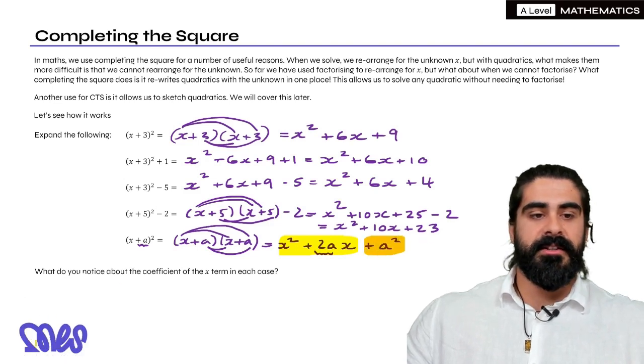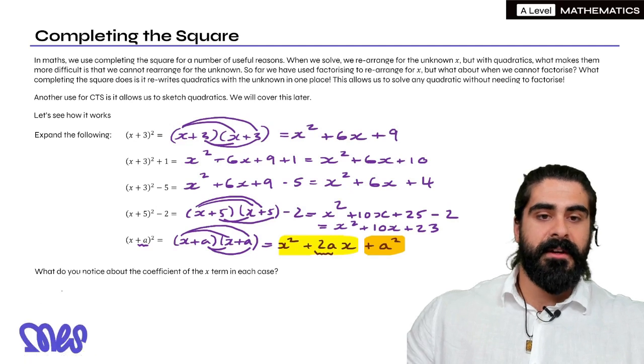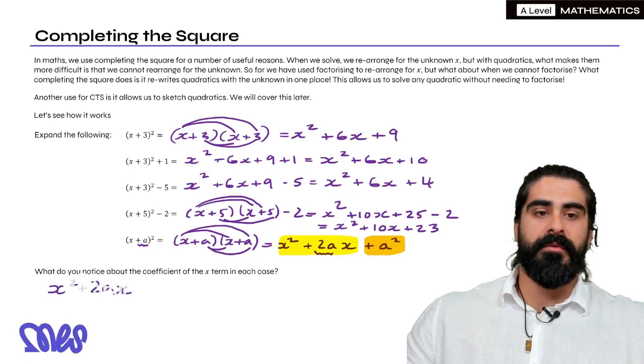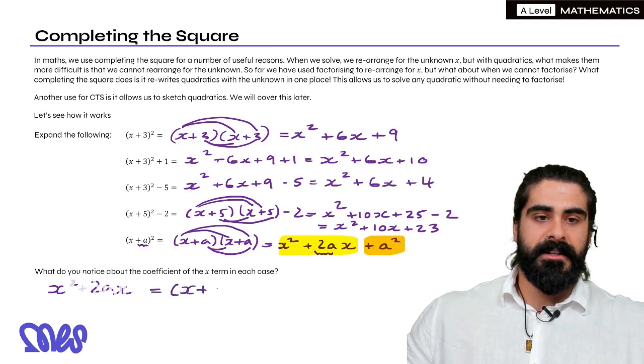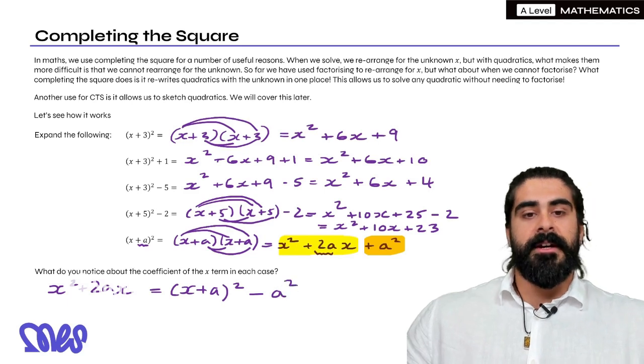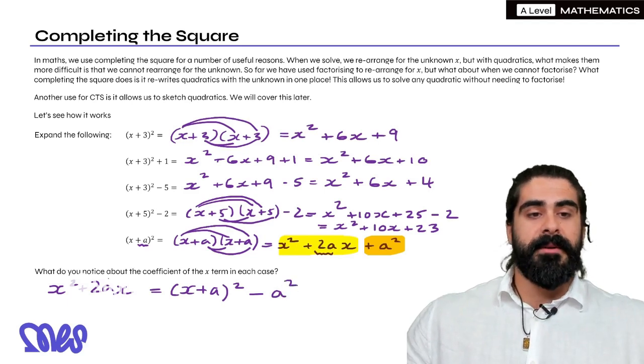So this, I'm trying to change color here. I can move this A squared to the other side, and I'm left with X squared plus 2AX. Then when I move the A squared over, I get X plus A squared minus A squared. So this is the key thing with completing the square.